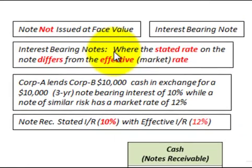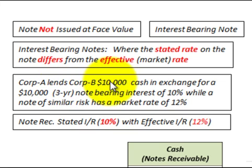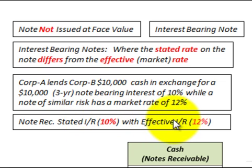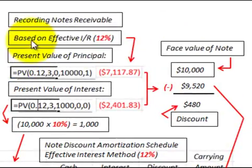Now let's look at an interest-bearing note where the stated rate on the note differs from the effective market rate of interest. Corporation A lends Corporation B $10,000 in cash in exchange for a $10,000 three-year note bearing interest at 10%, while a note of similar risk has a market interest rate of 12%. So the stated rate is 10% while the effective market rate is 12%.